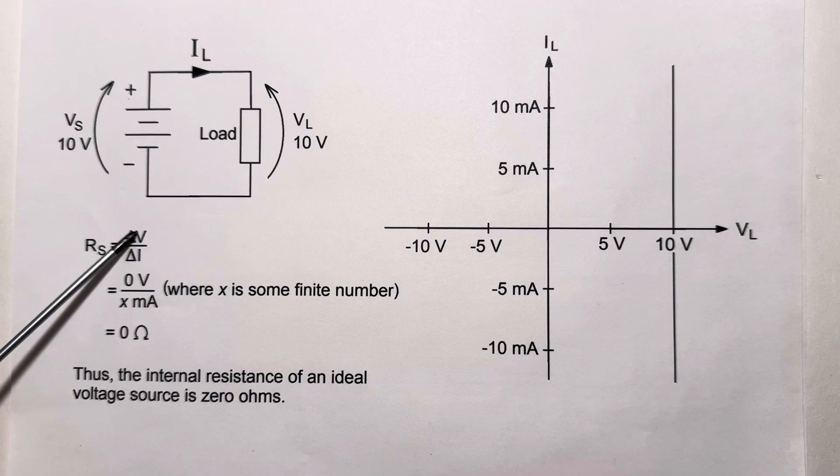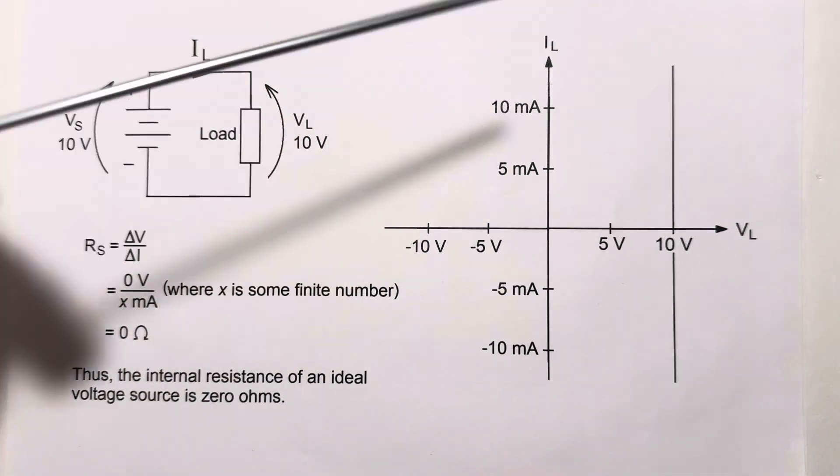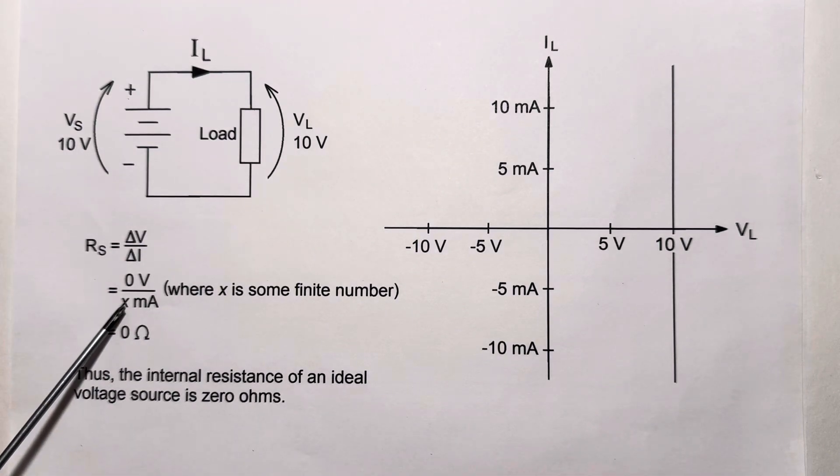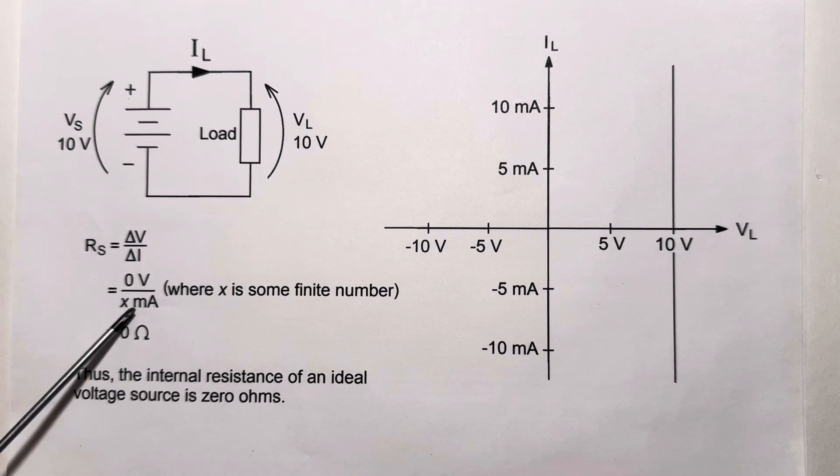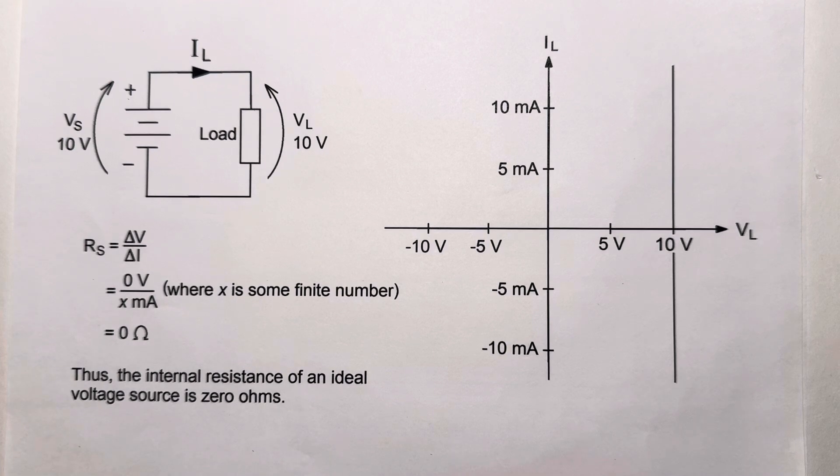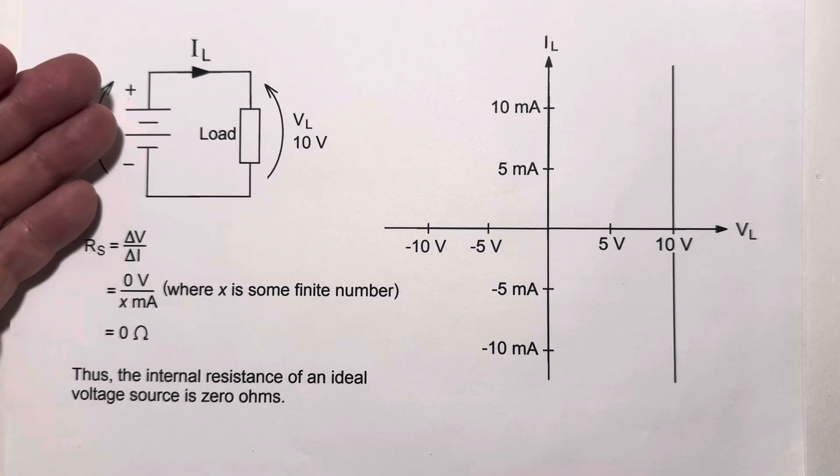We can see that here. R is equal to delta V over delta I. Well, delta V is zero. It never changes. So, the current can be any value, as long as it's finite. And we're going to have zero divided by some finite current, which is zero ohms. So, the important point to take away here is that the internal resistance of an ideal voltage source is zero ohms. If I were to turn this source down to zero volts, what's left? Its internal resistance, zero ohms.